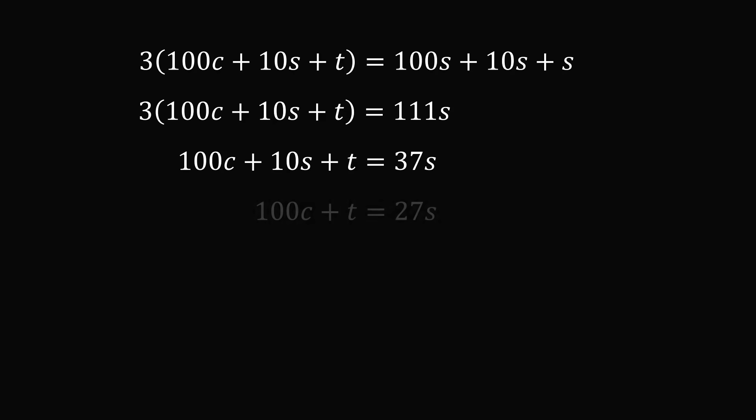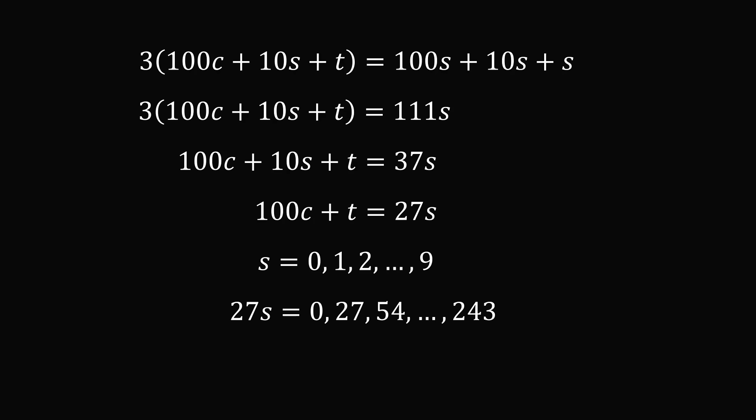Subtract 10S from both sides to get 100C plus T equals 27S. We know that S is a digit from 0 to 9, so 27S runs through the multiples of 27 starting with 0: it could be 0, 27, 54, and so on up to 243. For example, when S equals 9, 27 times 9 equals 243; when S equals 1, 27S equals 27.